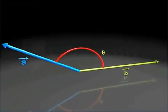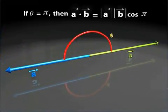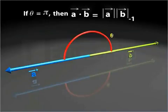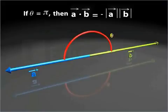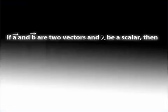The dot product of two vectors is minimum for theta equal to pi, as cos theta has its minimum value of minus 1 for theta equal to pi. This helps us conclude that the dot product of two vectors is the negative of the product of their magnitudes when theta equals pi.